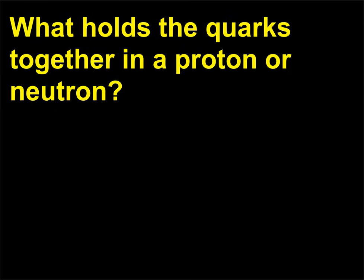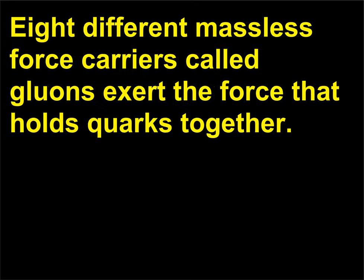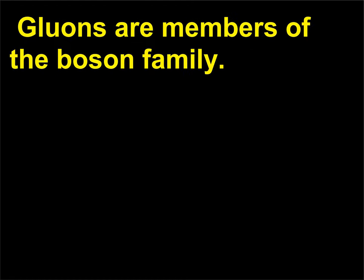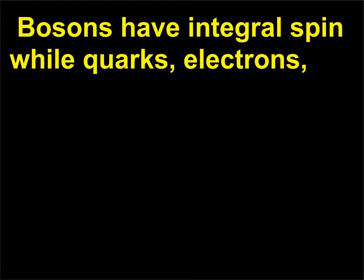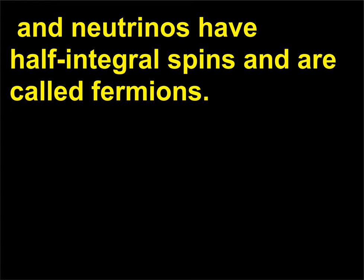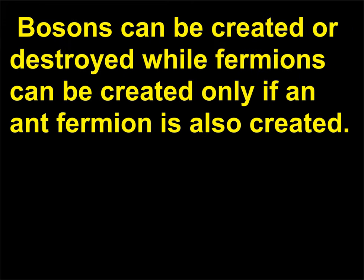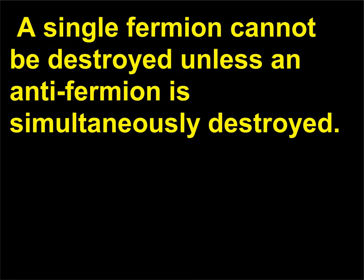What holds the quarks together in a proton or neutron? Eight different massless force carriers called gluons exert the force that holds quarks together. Gluons are members of the boson family. Bosons have integral spin while quarks, electrons, and neutrinos have half integral spins and are called fermions. Bosons can be created or destroyed while fermions can be created only if an anti-fermion is also created. A single fermion cannot be destroyed unless an anti-fermion is simultaneously destroyed.